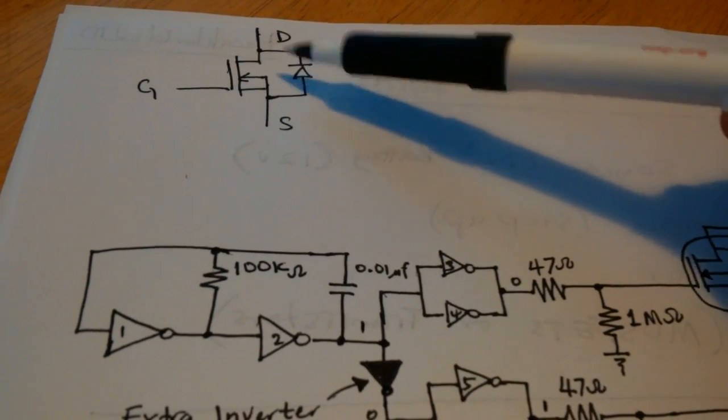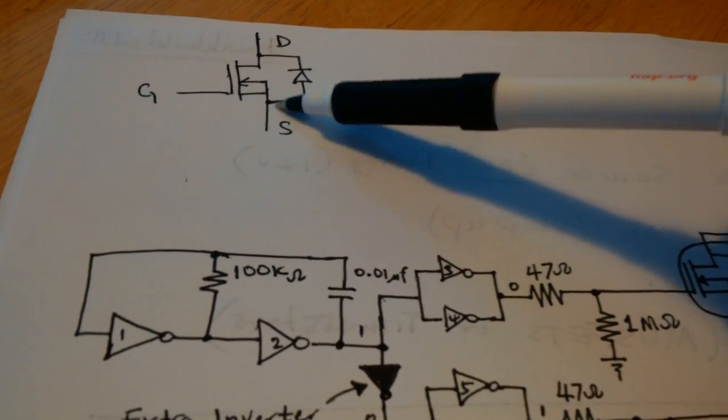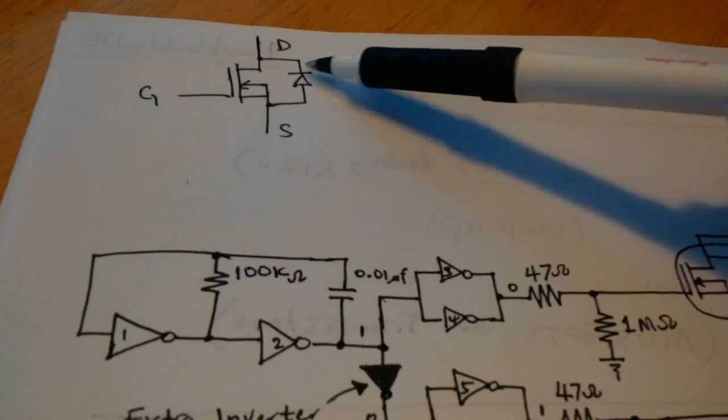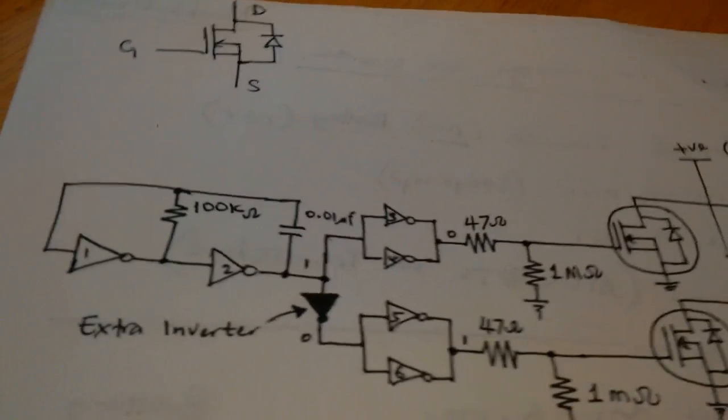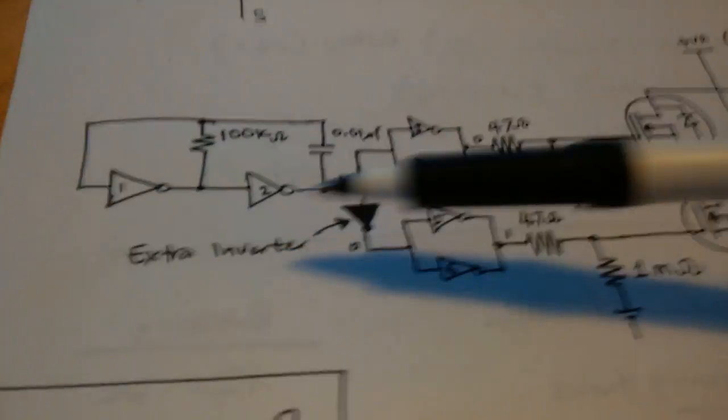This diode symbol you see here is part of the internal configuration of this MOSFET. For a transistor, you might have to put an external diode if it doesn't come with one already. Make sure you check the schematic if you're using a transistor.